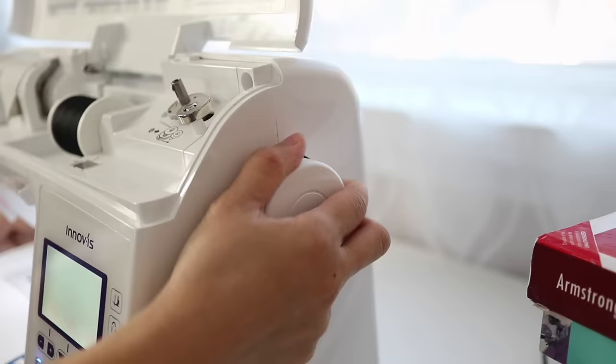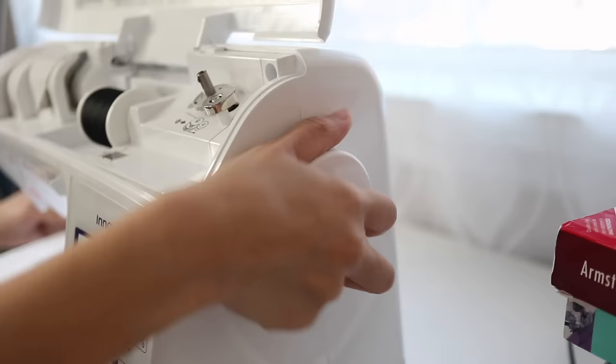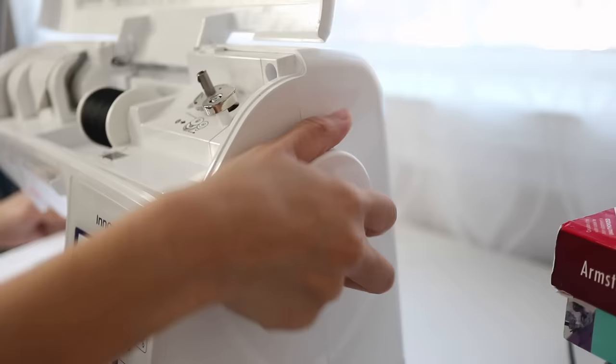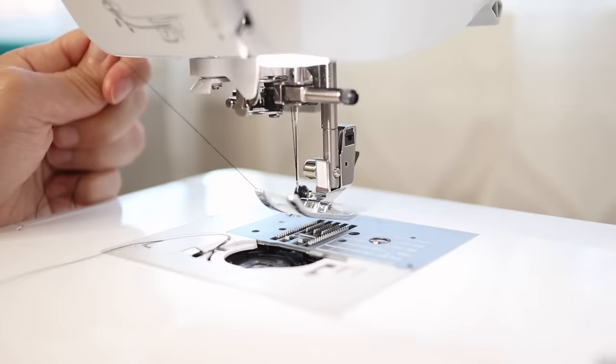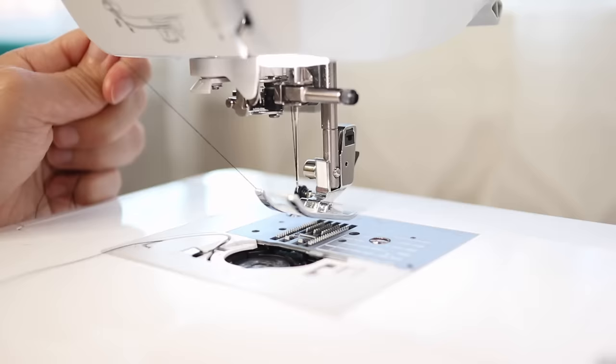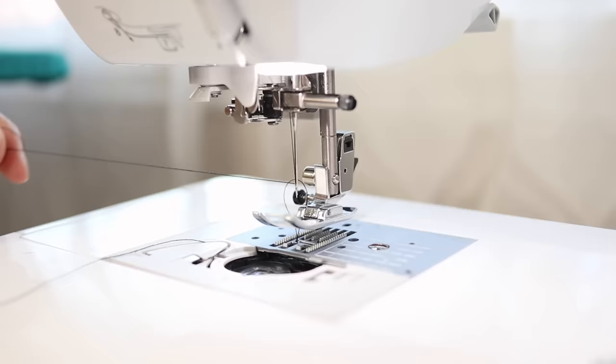Once your needle is threaded pull the thread out and hold onto it with your left hand. With your right hand turn the hand wheel towards you so the needle moves down to the bottom and as you keep turning the wheel to bring the needle back up tug on the top thread you're holding with your left hand to pull the bobbin thread up to the top. Bring both strands to the back of your machine so they're out of the way and we're ready for sewing.